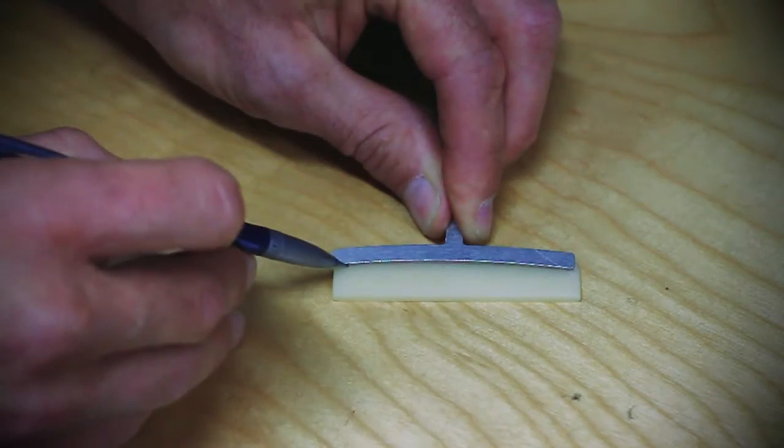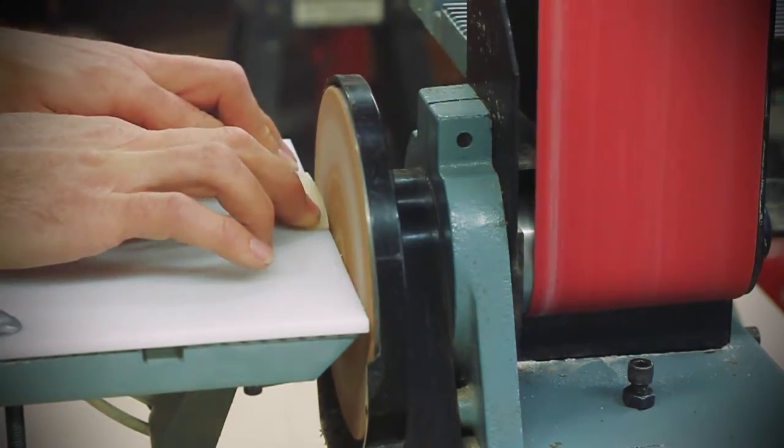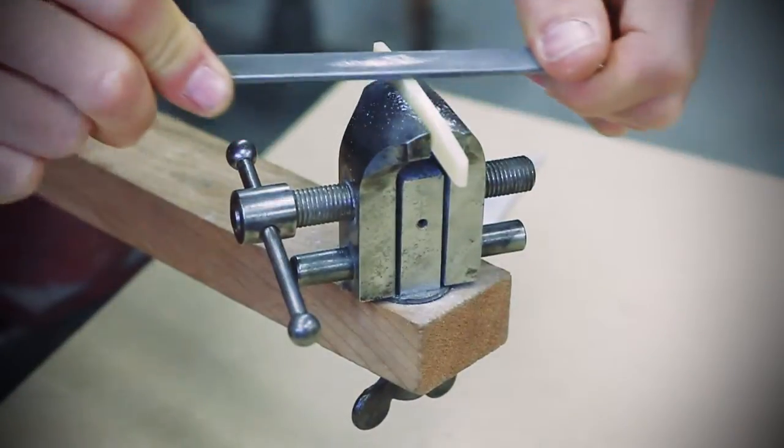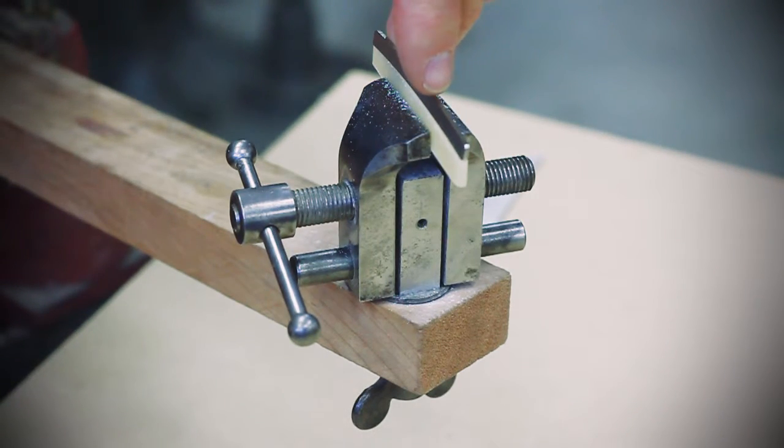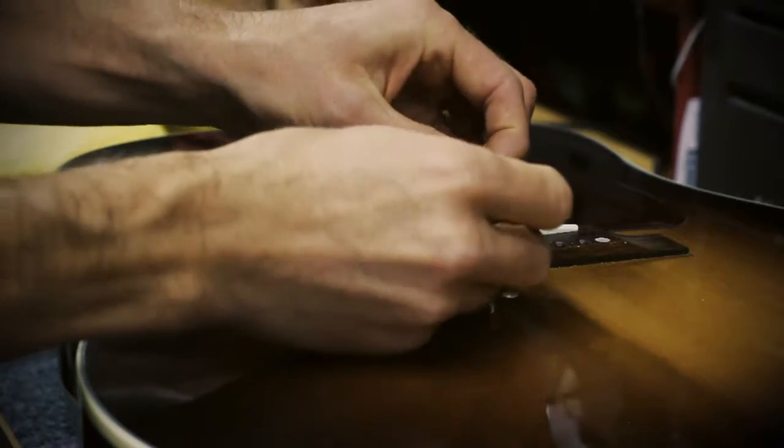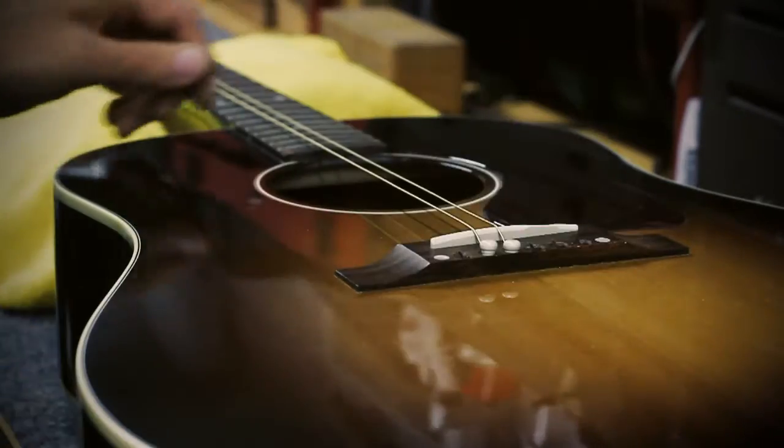When making or adjusting saddles by hand, one must be very careful to maintain a consistent radius to match the fretboard of the instrument while carefully adjusting the height of the saddle. Removing too much material requires making a new saddle, so it is common to proceed conservatively, frequently restringing the instrument to check one's progress.